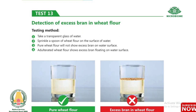Test 13: Detection of excess bran in wheat flour. Take a transparent glass of water and sprinkle a spoon of wheat flour on the surface. Pure wheat flour will not show excess bran on the water surface. Adulterated wheat flour shows excess bran floating on the water surface.